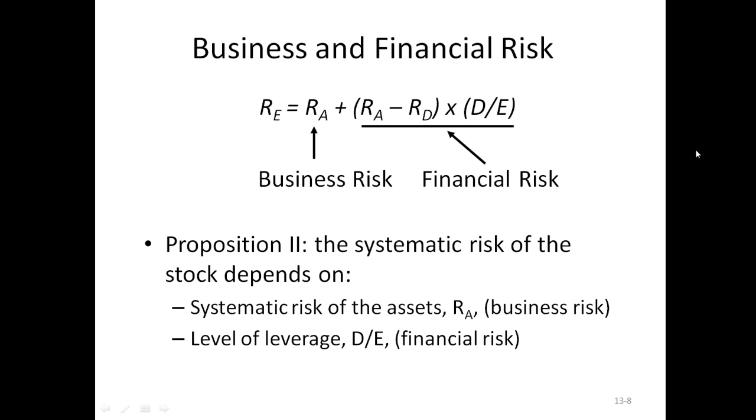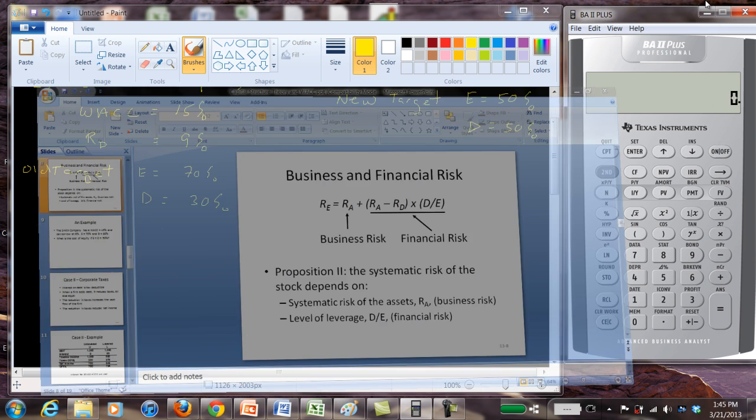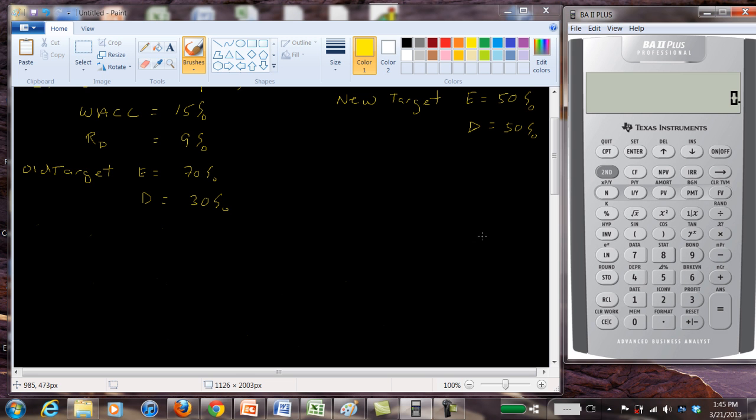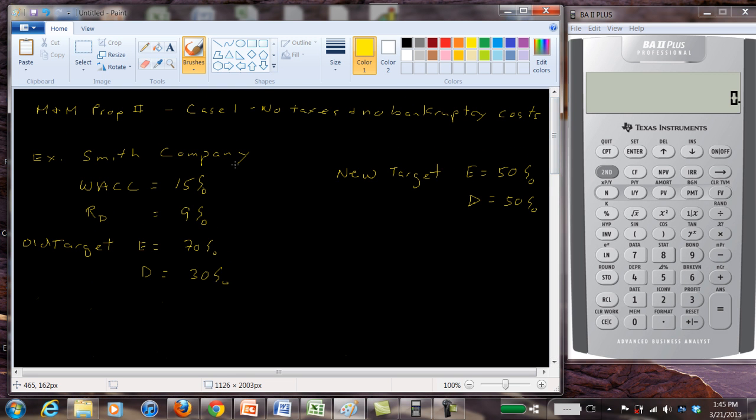And let's take a look at a numerical example. Here I've actually already written it out. We have this company and they have a weighted average cost of capital, which is the same as the return on assets of 15%. The return to debt is 9%. And there's a target debt equity ratio. The old target was 70% equity, 30% debt. And we want to see how that compares if they change their target to using more debt, a case where they use 50% debt and 50% equity.